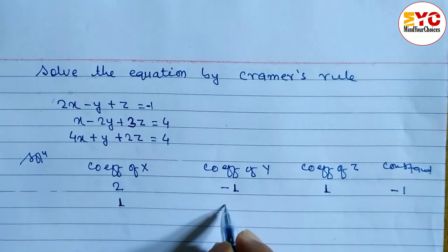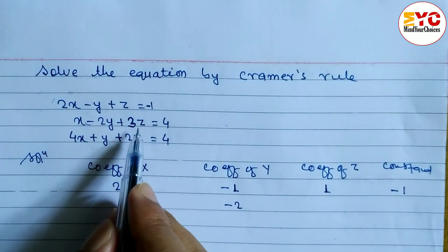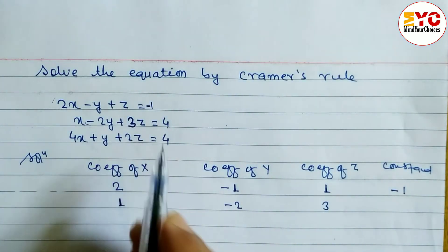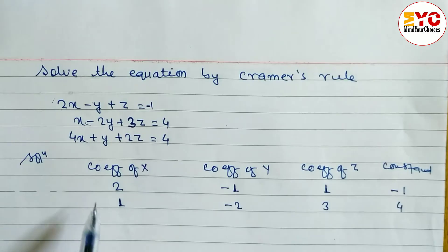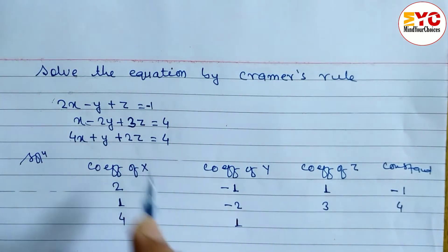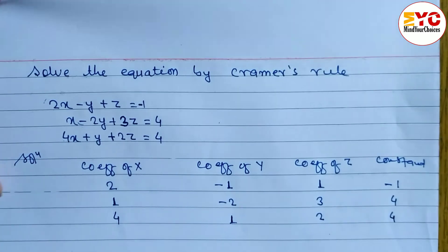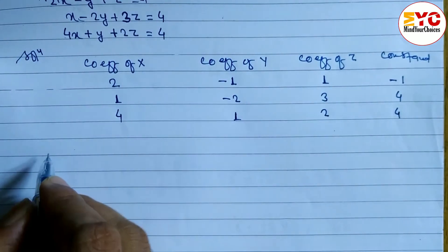In the second equation, coefficient of X is 1, coefficient of Y is minus 2 (we take the sign), coefficient of Z is 3 (positive, no need to write sign), and constant number is 4. Similarly, coefficient of X is 4, coefficient of Y is 1, coefficient of Z is 2, and constant number is 4.